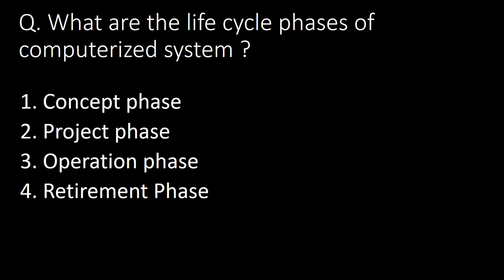What are the life cycle phases of a computerized system? There are four life cycle phases: first, concept phase; second, project phase; third, operation phase; and fourth, retirement phase.